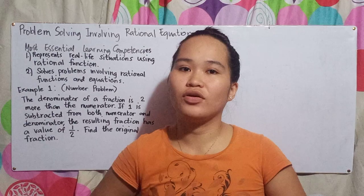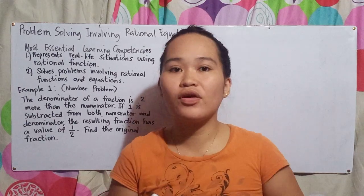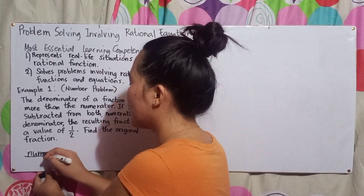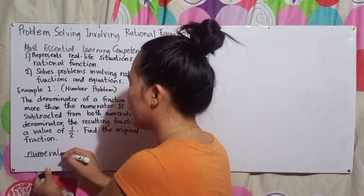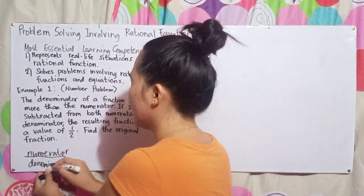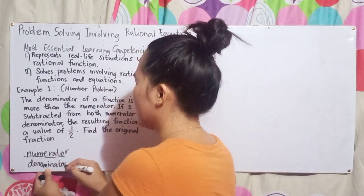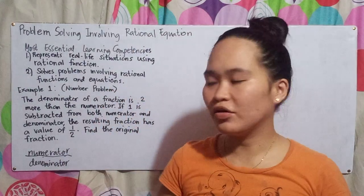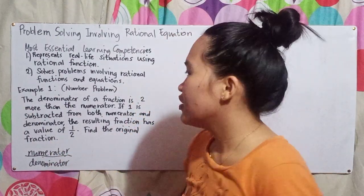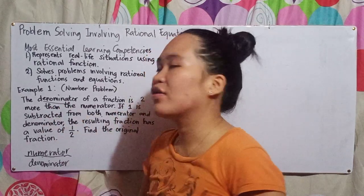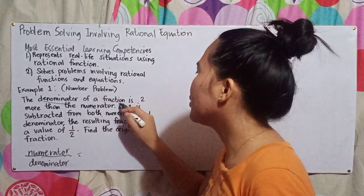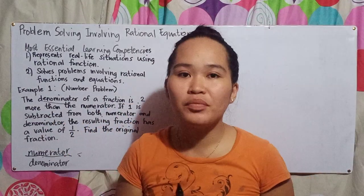So the first sentence says: 'The denominator of a fraction.' When we say denominator of a fraction, a fraction has a numerator on top and a denominator on the bottom. The denominator is on the bottom. 'Is two more than the numerator.'